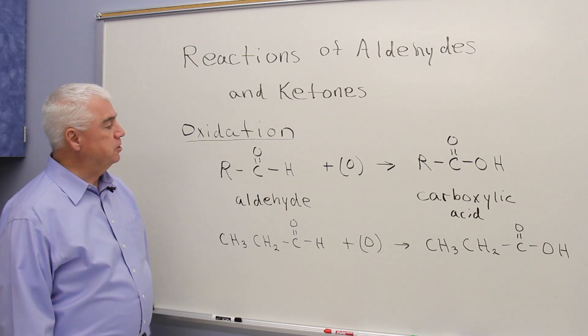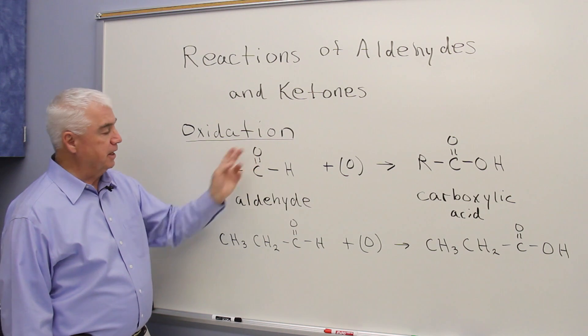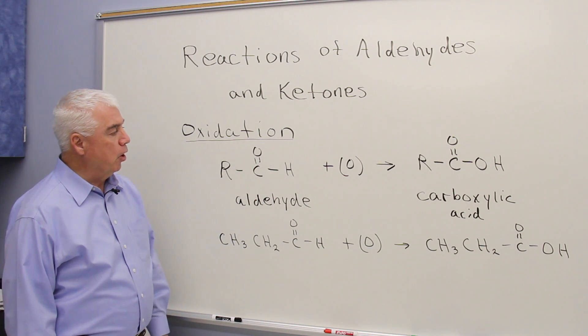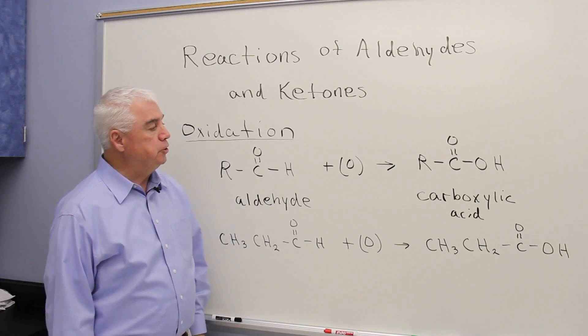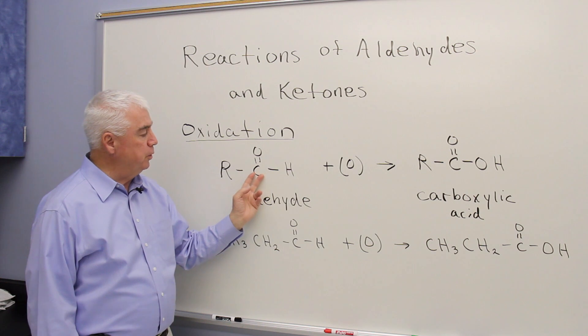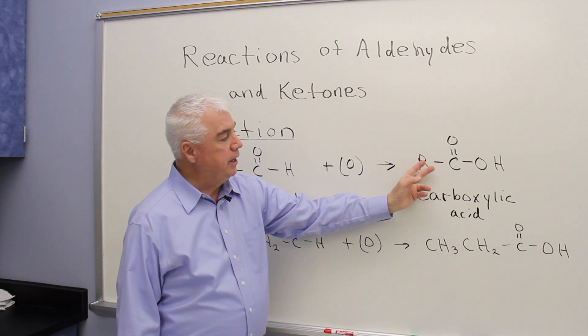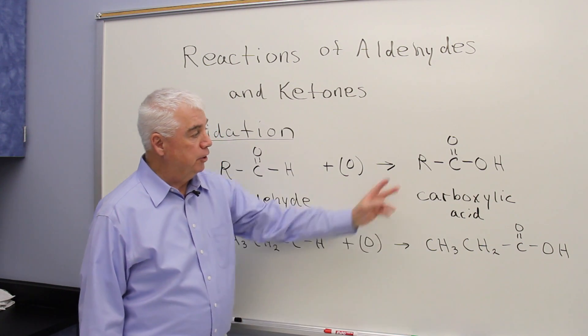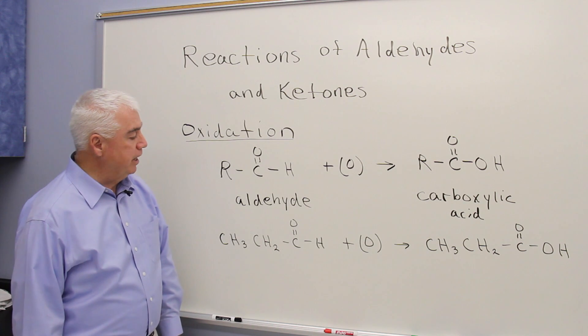The first is oxidation. Here's the structure of an aldehyde. It's got that C double bond O with the hydrogen attached to the carbon. Then the O in parentheses indicates oxidation. And the O in essence inserts itself between this carbon-hydrogen bond. And over here on the right-hand side, we get a carboxylic acid as the product. New functional group, C double bond O with an OH attached.